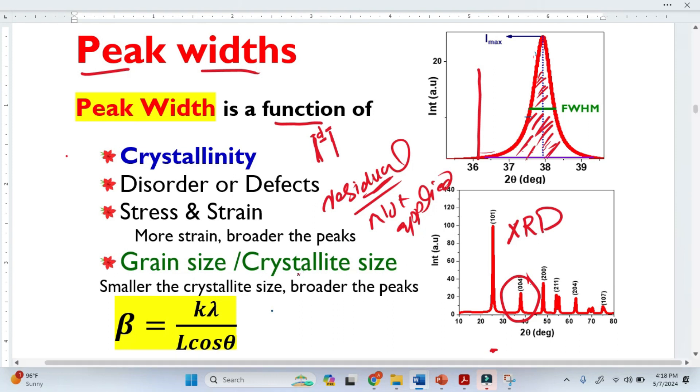The last thing is very, very important—the crystallite size. We know every material is made from particles, from crystallites. So from this peak width, we can calculate the crystallite size. Smaller the crystallite size, broader the peaks.